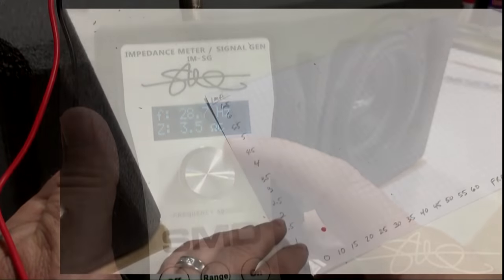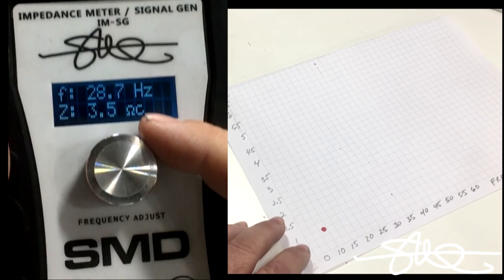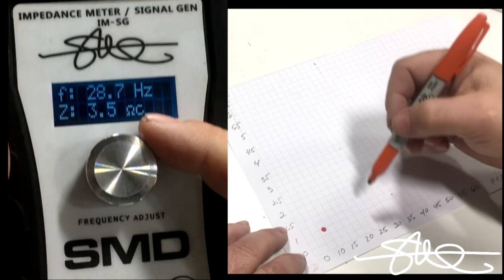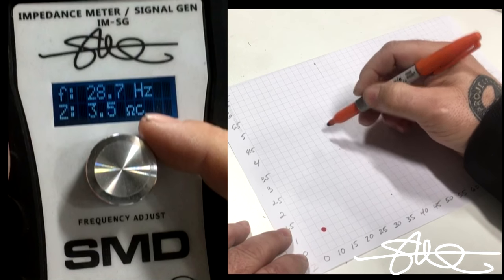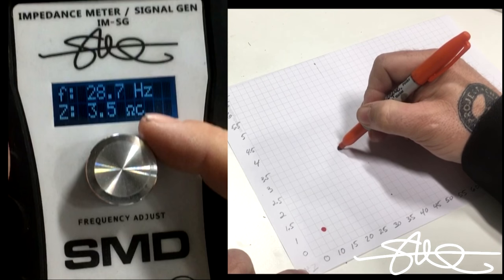Alright, we started at the very bottom. Our first peak is going to be at around 28.7Hz, so we're going to go 28.7 and 3.5 ohms. That little dot right there.